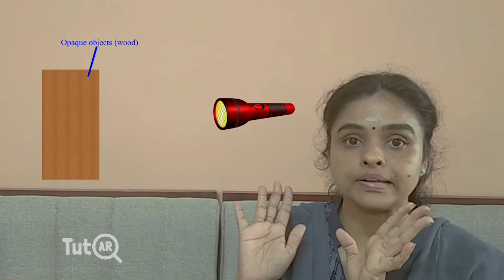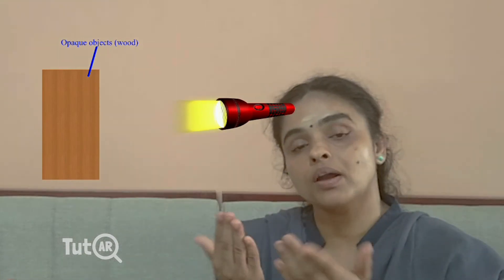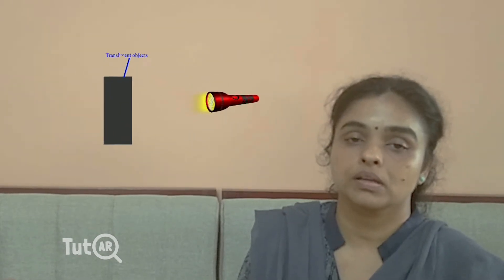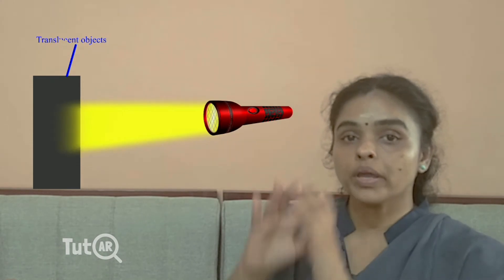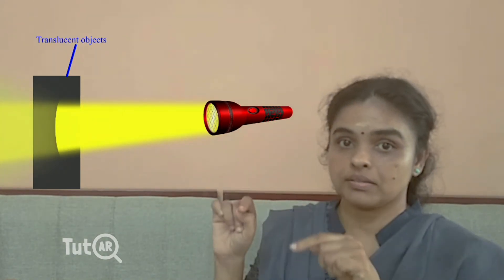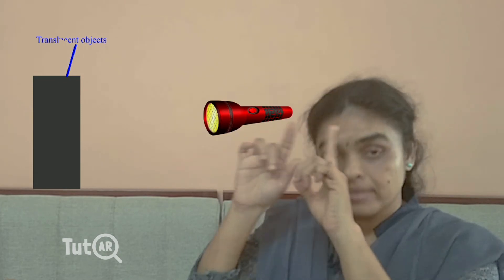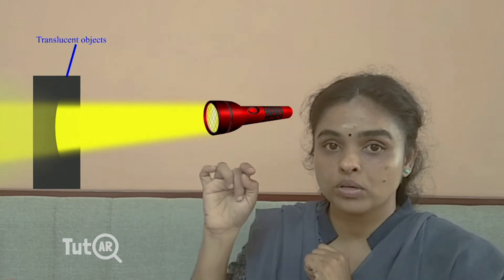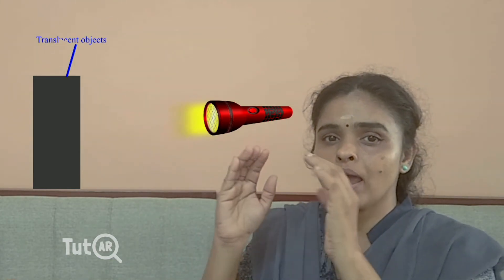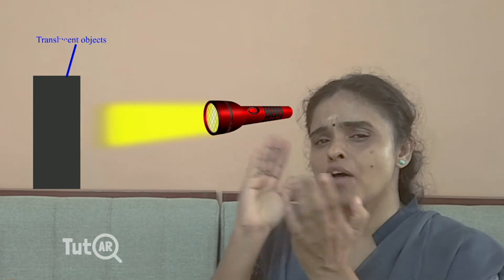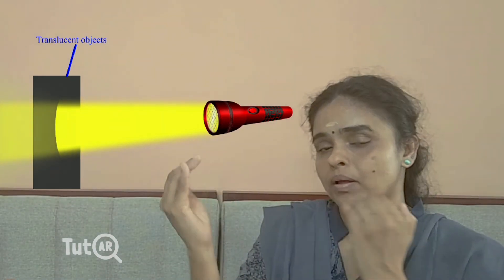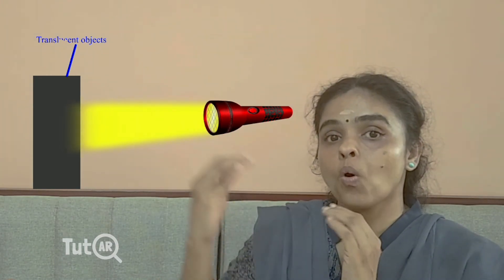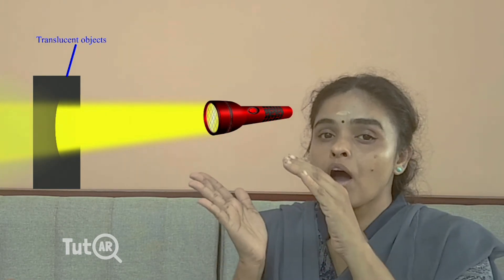Is the concept clear? Next, we are going to see what translucent objects are. Here you can see a designed glass. The same way, light comes from a torch, but you can see only a partial part — only half of the light rays pass through it.